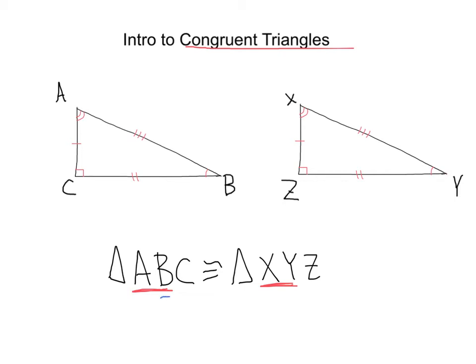Next, we've got side BC and side YZ — let's see if those match up. Here we've got side BC with two congruent dashes, and here we've got YZ with two congruent dashes, so those match up. Lastly, we should have AC matching with XZ. We've got AC with one congruent dash and XZ with one congruent dash. So remember to keep in mind the order these are placed, because it tells you which angles are congruent and which sides are congruent.